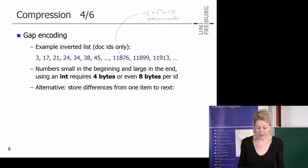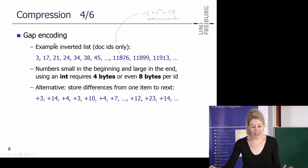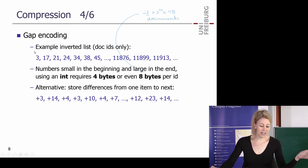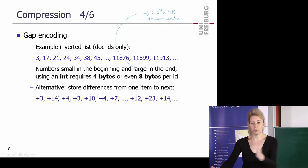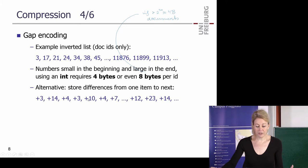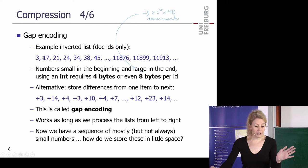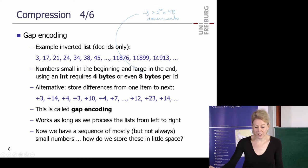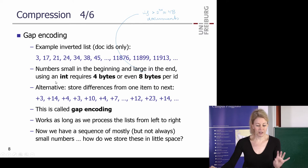A simple trick: instead of storing the doc IDs directly, store the differences — the gaps — from one item to the next. For example, 3, 17, 21 becomes gaps 3, 14, 4. This is equivalent information; you just sum left to right to recover the originals. The advantage: the original numbers grow large and require many bits. The gaps are usually small — if you have runs of numbers, you get plus-one, plus-one, plus-one. So we now want to encode numbers that are usually small but sometimes large, using as few bits as possible.